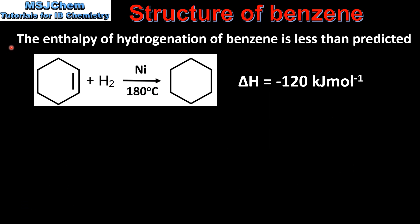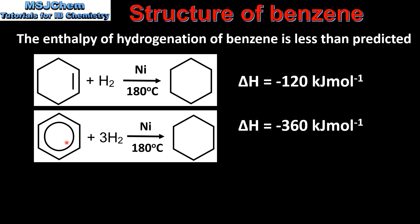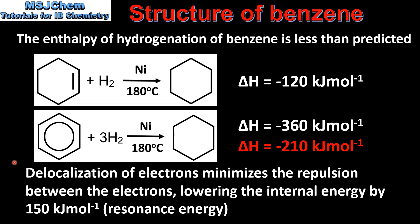The next reason is that the enthalpy of hydrogenation of benzene is less than predicted. Cyclohexene has one double bond and reacts with one mole of hydrogen to form one mole of cyclohexane, with an enthalpy change of −120 kJ/mol. According to the Kekulé structure, benzene has three double bonds, so we'd expect the enthalpy change to be three times as much, giving −360 kJ/mol. However, the actual enthalpy change for the hydrogenation of benzene is only −210 kJ/mol. This is because the delocalization of electrons in benzene minimizes electron repulsion, lowering the internal energy by 150 kJ/mol — known as the resonance energy.